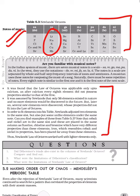The second limitation was that Newland assumed only 56 elements existed in nature and no new elements would be discovered. He predicted that there were only 56 elements. But later, several new elements were discovered and they did not fit into his table.